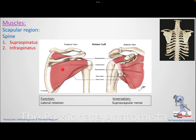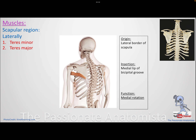Supraspinatus and infraspinatus are supplied by the suprascapular nerve. Teres major comes from the lower part of the lateral border of the scapula and is attached to the medial lip of the bicipital groove. The teres major muscle is a medial rotator. Remember that teres minor sits above teres major - teres minor goes with the SIT muscles to the greater tuberosity, while teres major goes to the medial lip of the bicipital groove.